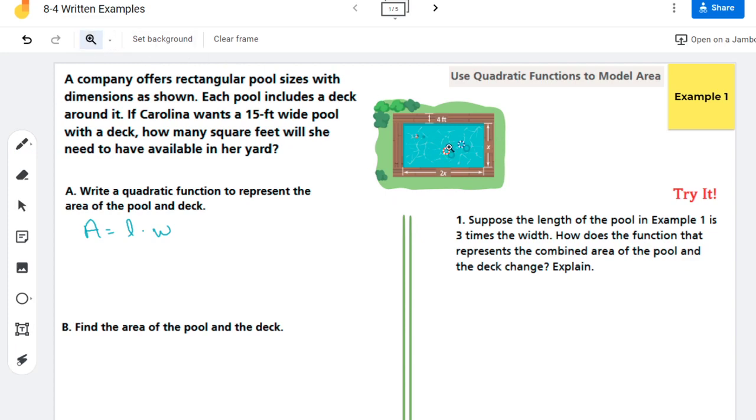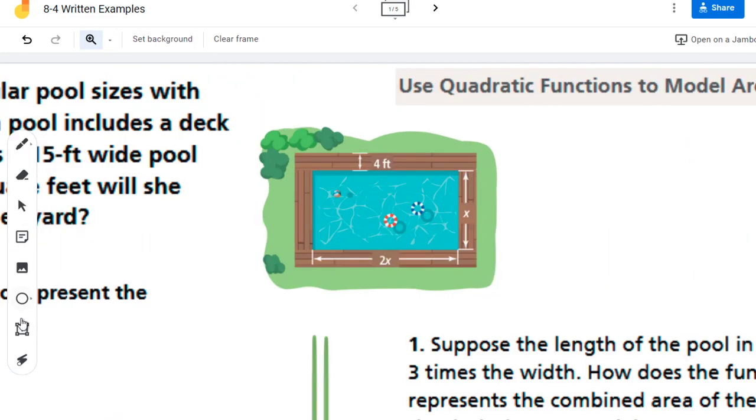Now notice when I look at this pool, I'm actually going to zoom in just a little bit for a moment. When I look at this pool, they're saying the length of the pool is 2x and they're saying the width is x here. And so with this deck going around, not only is the deck up here going to add four feet, but down here will also add four feet. So that's kind of the trick to these problems is when you have something going around it. Remember, it goes on both sides. The same thing for the width here and here.